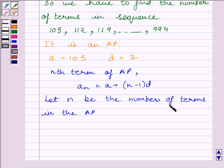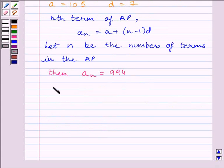Let n be the number of terms in the AP. Then a_n is equal to the last term of the AP, that is 994. And we know a_n is given by a plus (n-1) multiplied by d.